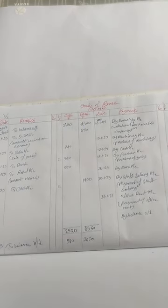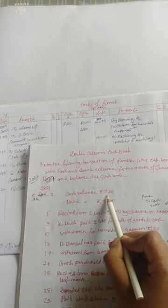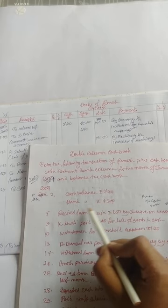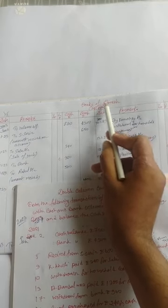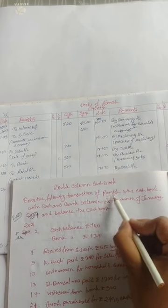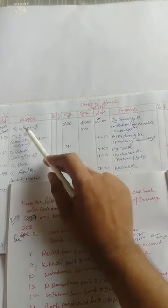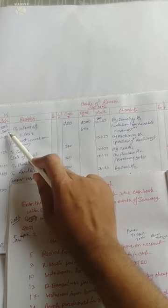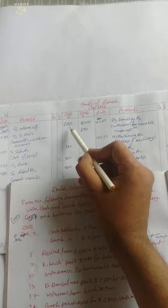Now we will solve the double column cash book. The first entry: cash balance 7,020 and bank 4,300. First, write 'Books of the proprietor' — the proprietor's name here is Thomas. Then write 'Cash Book'.